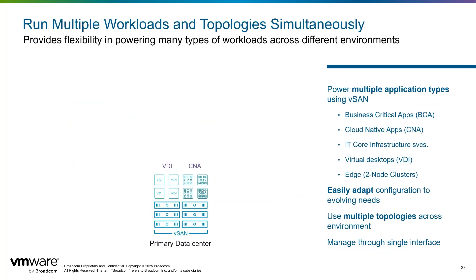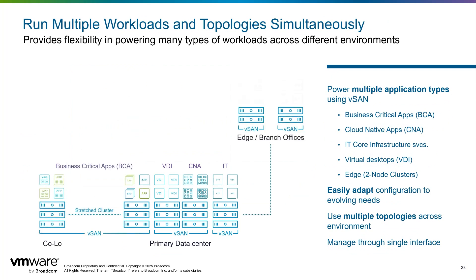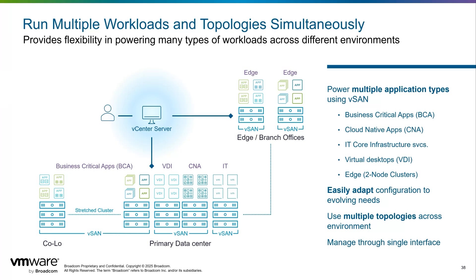vSAN supports all different types of workloads and topologies. You can run business-critical applications alongside other applications, or carve out clusters focused on specific requirements, whether VDI workloads, business-critical workloads, cloud-native applications, or common IT service workloads. The flexibility of the architecture allows you to deliver those services in many different ways — housed in a central data center, stretched across two physical or geographic sites, across branch offices, or expanded using the cloud. vSAN can meet all of those demands using a single management plane, all within VMware Cloud Foundation.